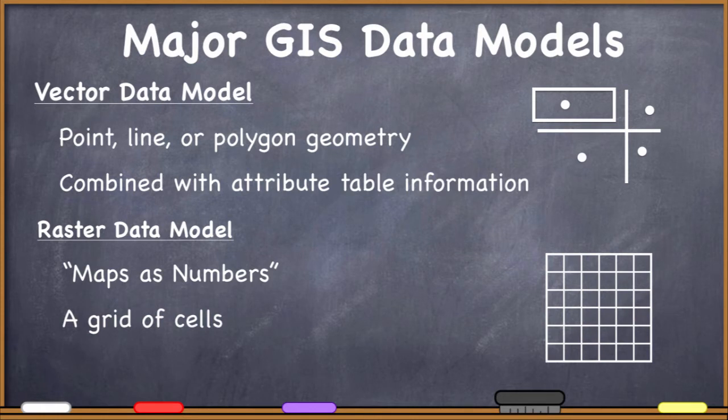Rasters are at their core a grid of cells. So when you think vector: points, lines, polygons. Raster data model: grids of cells, maps as numbers. So what we're going to do, what do we do with all those numbers?